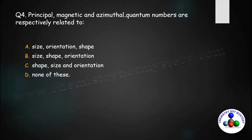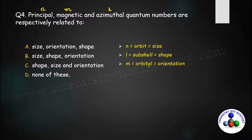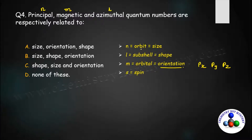Next question: principal, magnetic, and azimuthal quantum numbers are respectively related to what? The principal quantum number n defines the orbit — the size of the atom. The azimuthal quantum number l corresponds to the subshell and tells you about the shape — spherical, dumbbell, or double dumbbell. The magnetic quantum number m tells you about the orbital orientation, such as px, py, or pz. Option A is the right answer.